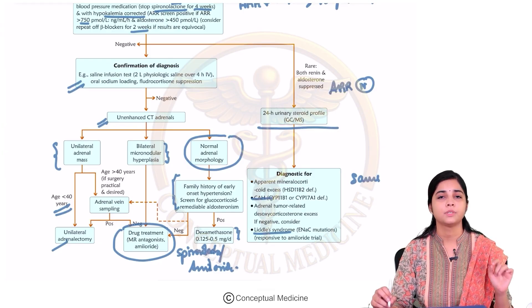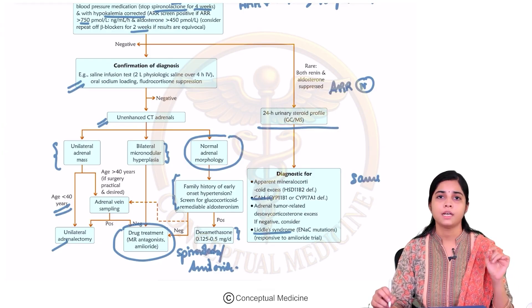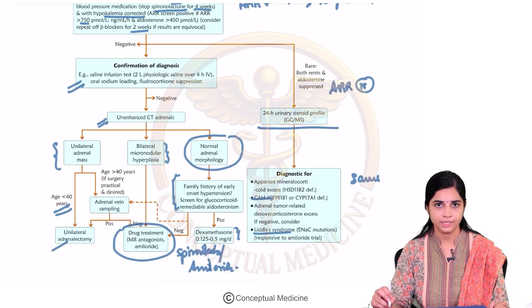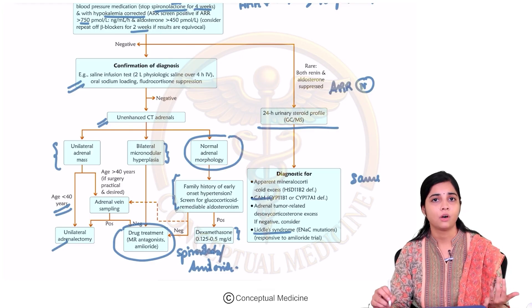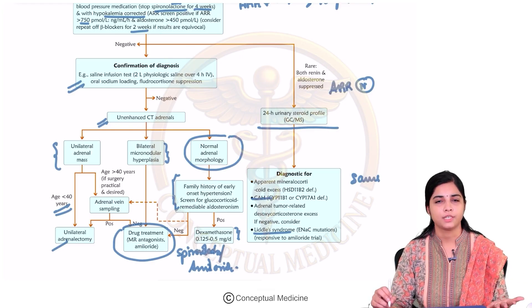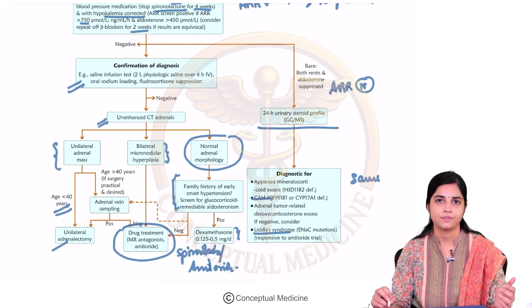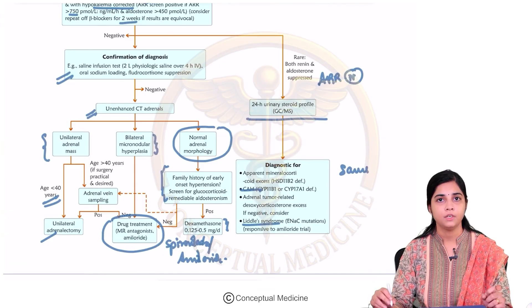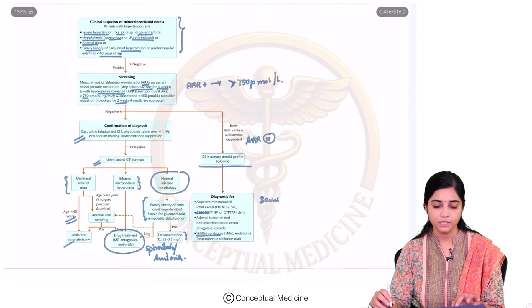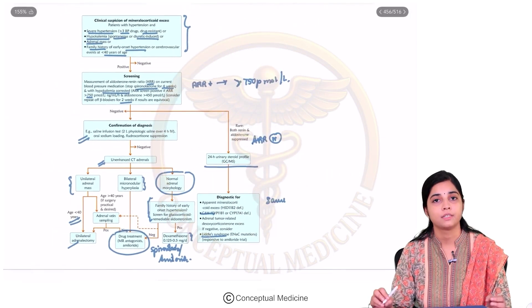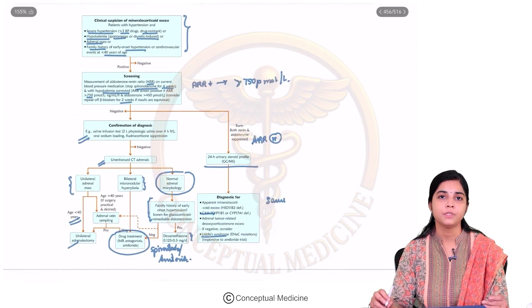If adrenal morphology is normal and family history is positive, think of GRA — glucocorticoid remediable aldosteronism — and treat with glucocorticoids. In conditions where the ARR is normal, it could be one of the rare genetic conditions, so do a 24-hour urinary steroid profile to diagnose SAME, congenital adrenal hyperplasia, or Liddle syndrome. Once the ARR screening test is positive, do a confirmatory test, then CT to find if it's adenoma or hyperplasia and treat accordingly. With this we have come to the end of our discussion on mineralocorticoid excess.